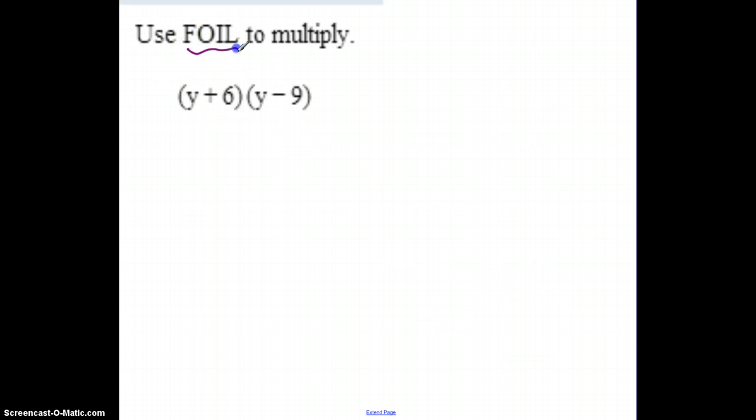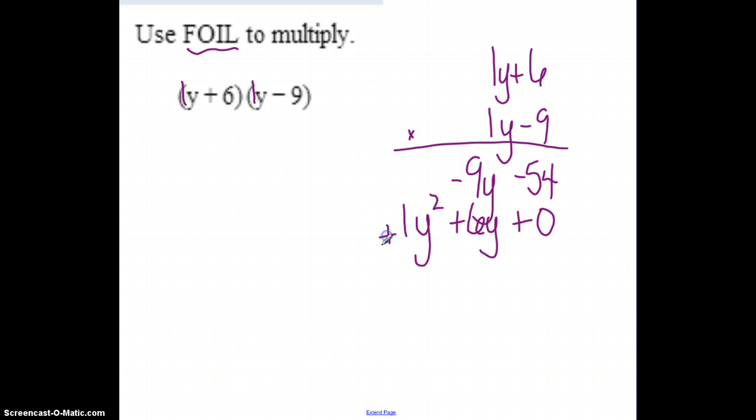Let's try another one. Again, if you see this FOIL, that's like distributive, that's that shortcut method. Basically, they want you to multiply those together. So I'm going to add ones. Negative 9 times 6 is negative 54. Negative 9 times 1y is negative 9y. Add a zero. 1y times 6 is 6y. 1y times 1y is 1y squared. And then total. Now remember, more than likely, you will see them drop that one at the very beginning. So that will be your most simplified version.